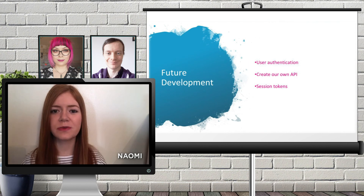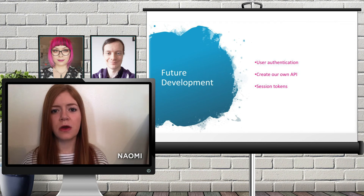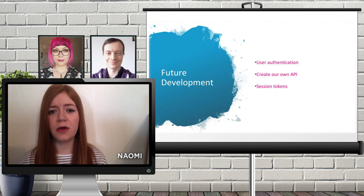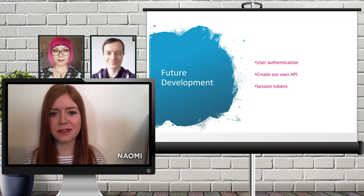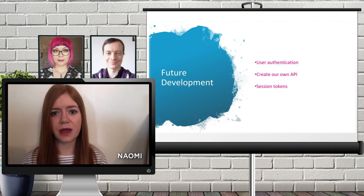Due to time constraints we decided against implementing Firebase user authentication, but if we had more time we would look at adding additional features linked to authentication such as a user profile which could hold a personalised avatar, user stats, scores and badges. We used a third-party API for our quiz questions but with more time we would look at creating our own API, particularly since questions categorised as easy aren't always that easy. Another feature we would look to add would be session tokens to ensure that users replaying the same category and difficulty would not receive duplicate questions.